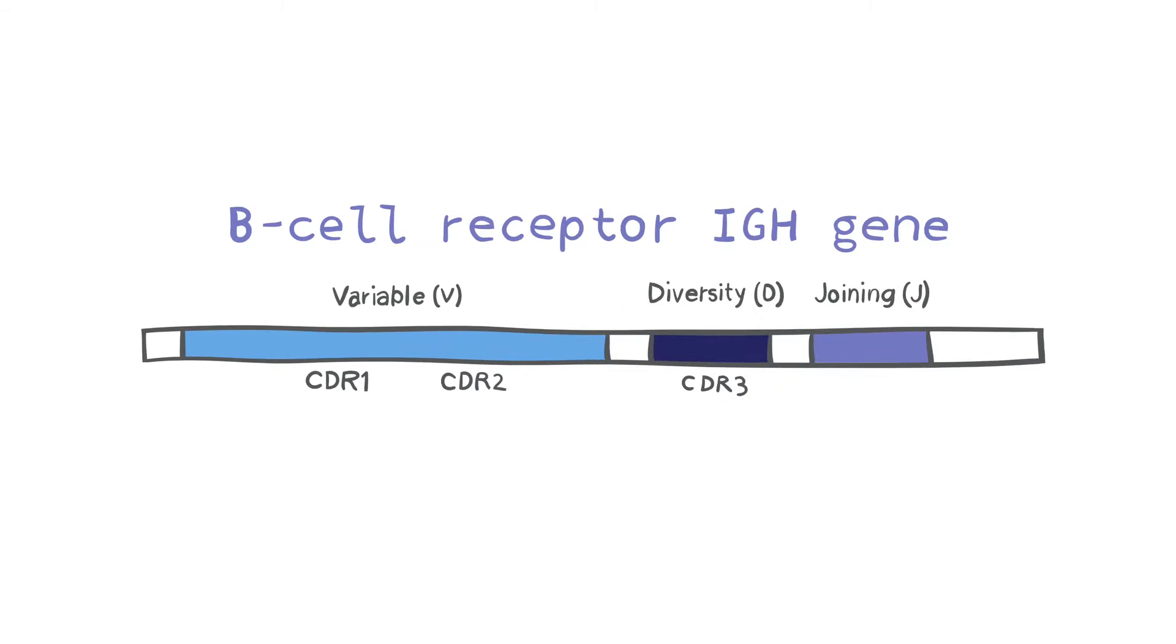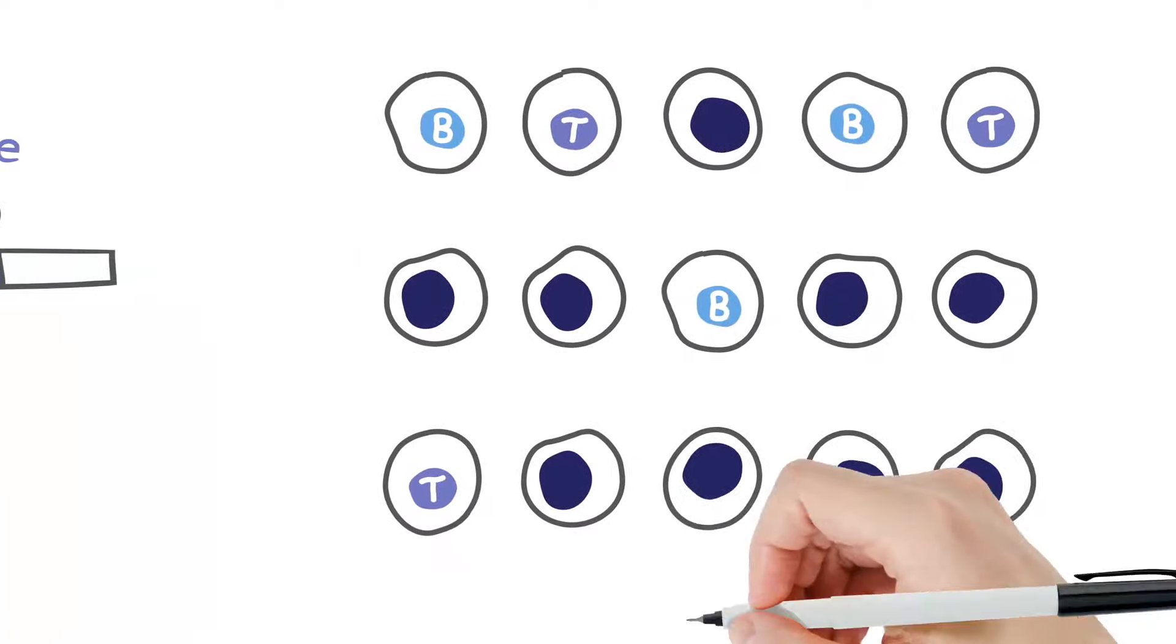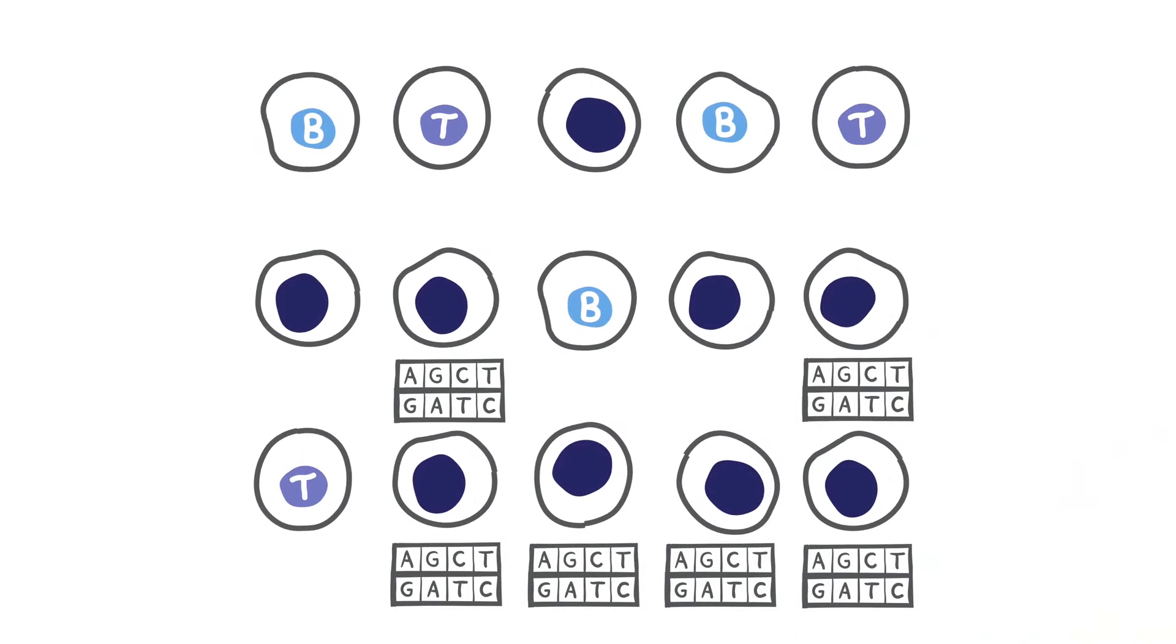Using next-generation sequencing, or NGS, part of the receptor's genetic sequence can be read and the clone frequency quantified to identify the dominant clone of interest.